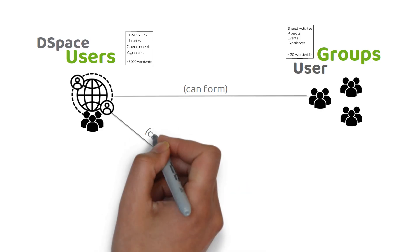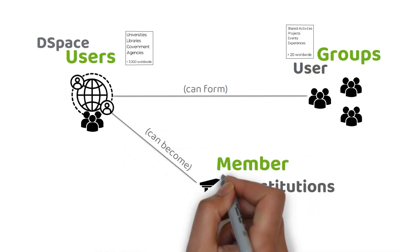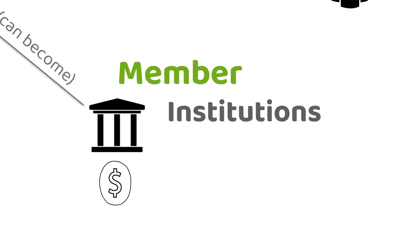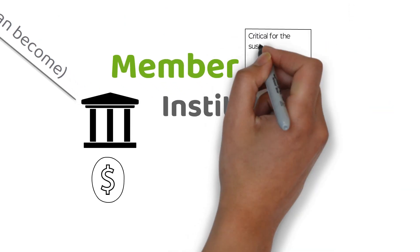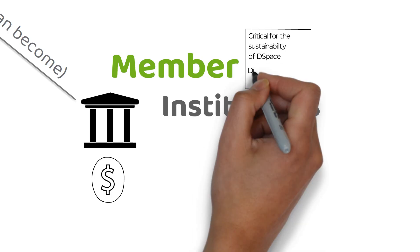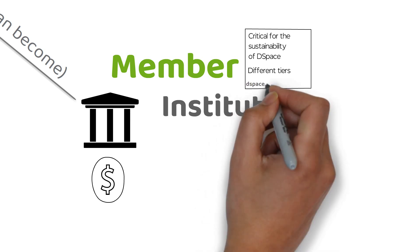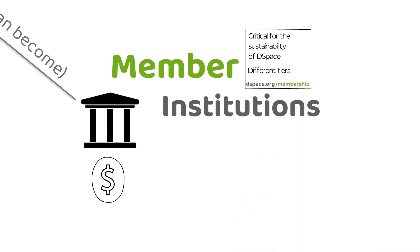Institutions that use DSpace can also decide to become DSpace members. Member institutions commit themselves to supporting DSpace financially. Since DSpace is open source and free to use, membership is critical to ensure the sustainability of DSpace. DSpace membership is available at different levels or tiers. If you are interested in learning more about becoming a DSpace member, please visit our website at DSpace.org/membership.